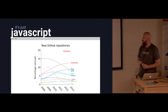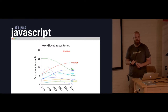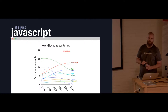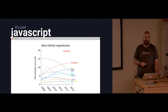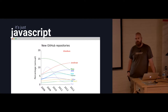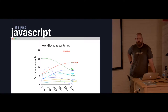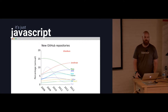JavaScript is outpacing Java by about 2x in libraries on GitHub. That has a couple benefits: a lot of people know it, which makes it easier to hire for — important when building a business. You don't want to have to hire an expert. Someone with two years of JavaScript is good to go, whereas two years of Phoenix experience would probably cost you a lot of money right now.